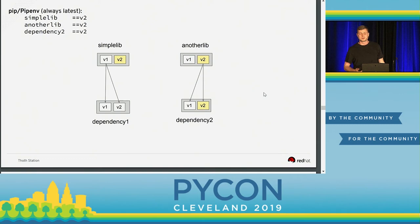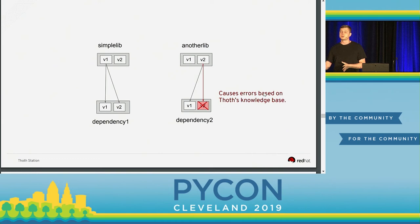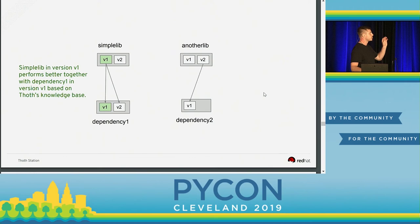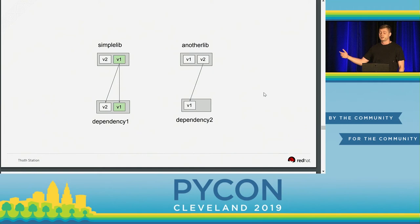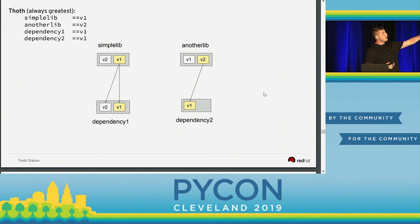Now take a look at how Thoth approaches this problem. We have this dependency graph, and before the actual resolution, we look into our knowledge base and find out that Dependency 2 in version V2 has some issues — for example, it does not install into your runtime environment because of a different Python version. So we simply remove that dependency from the dependency graph. Then we look into our knowledge base again and see that SimpleLib in version V1 performs very well with Dependency 1 in version V1, so we shift these versions to take precedence during resolution. The result: SimpleLib V1 with Dependency 1 V1 due to good performance, and AnotherLib V2 with Dependency 2 V1 because V2 causes issues.